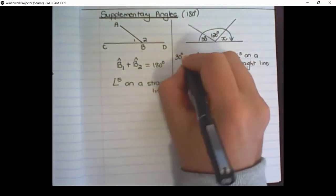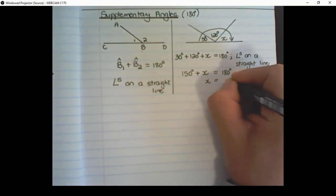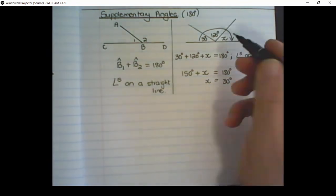Now I can add up like terms. And as I am simplifying, I find that X is equal to 30 degrees.